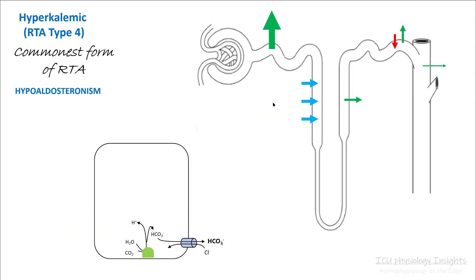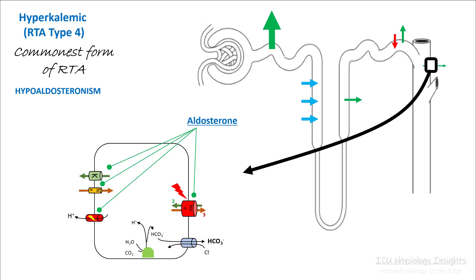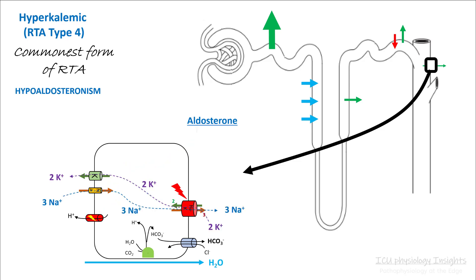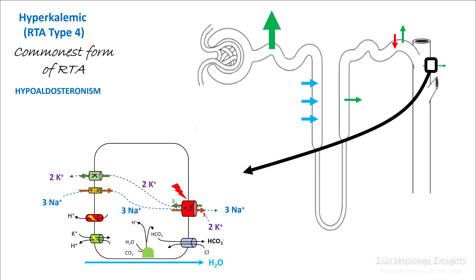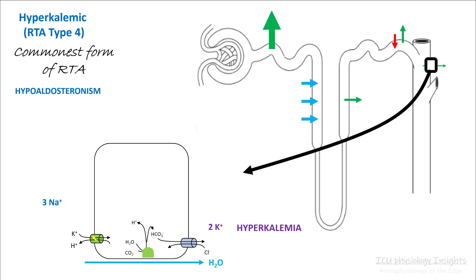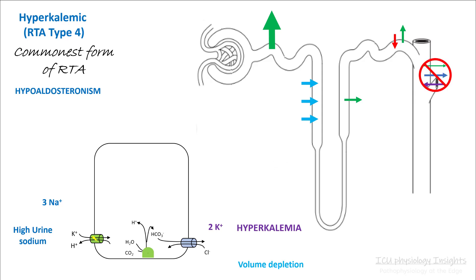Finally, we have type 4 RTA, which is a hyperkalemic RTA. This is the commonest form of RTA and is seen when aldosterone does not work effectively. Aldosterone works in the proximal collecting duct, stimulating the sodium-potassium pump along with sodium-potassium ATPase, and also helps excrete hydrogen ions. With aldosterone present, you absorb sodium and excrete potassium and water, and bicarb follows along with the sodium. Without aldosterone, you don't have efficient pumping of these channels, so sodium stays in the urine, potassium stays in the capillaries, you can't generate bicarb, and you become volume depleted — resulting in hyperkalemia and hyponatremia.